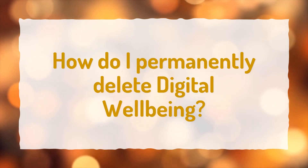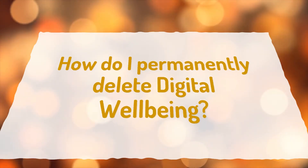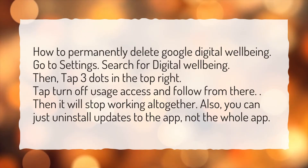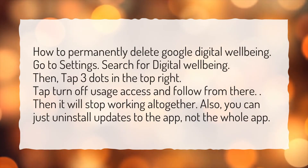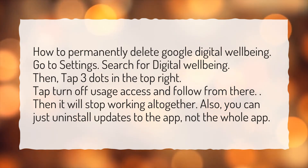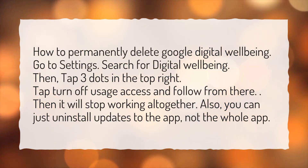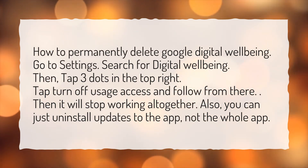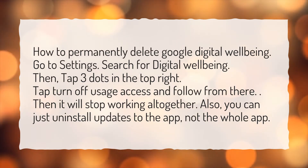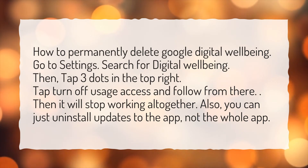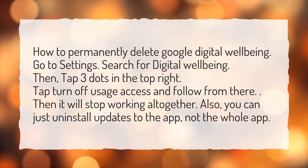How do I permanently delete digital well-being? Go to Settings and search for digital well-being. Then tap the three dots in the top right, tap 'Turn off usage access,' and follow from there — then it will stop working altogether. Also, you can just uninstall updates to the app, not the whole app.